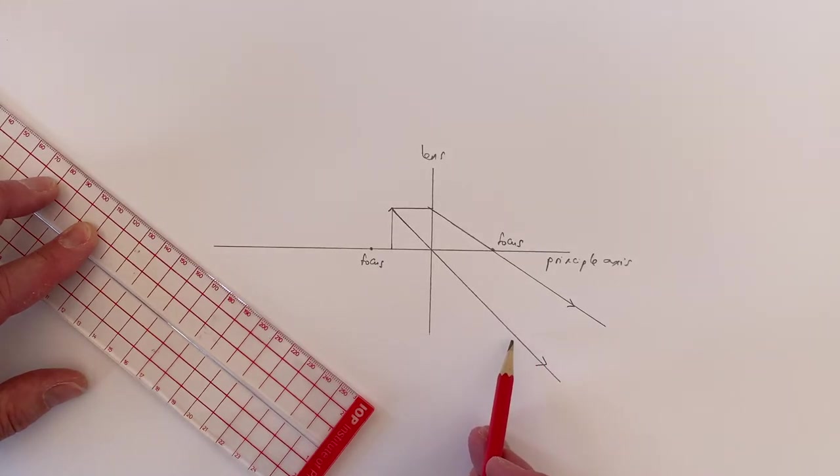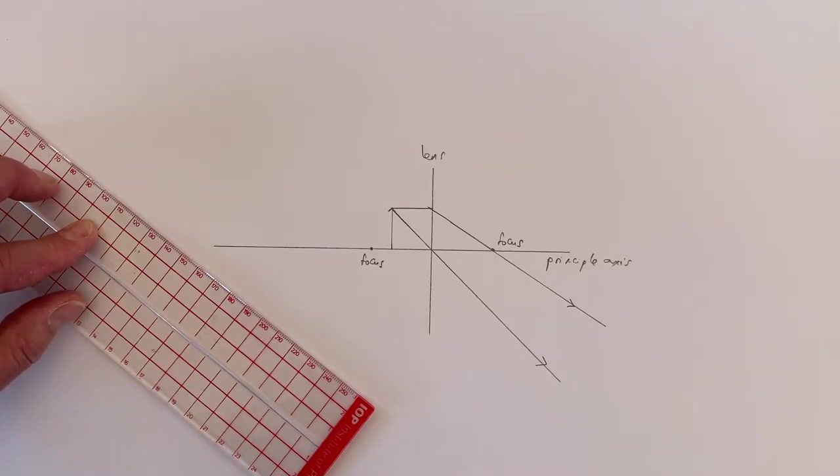They're no longer converging. These two lines will never cross, meaning that I'm never going to get a real image forming.